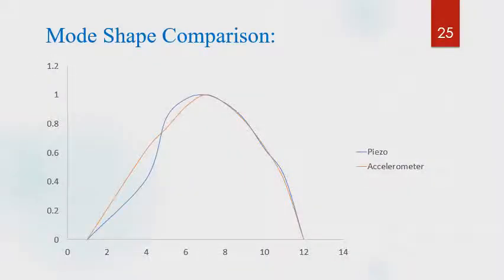Mode shapes obtained using accelerometer and piezo sensors were plotted on the same graph for comparison. As can be seen, mode shapes varied a little when using piezo sensors compared to the accelerometer.